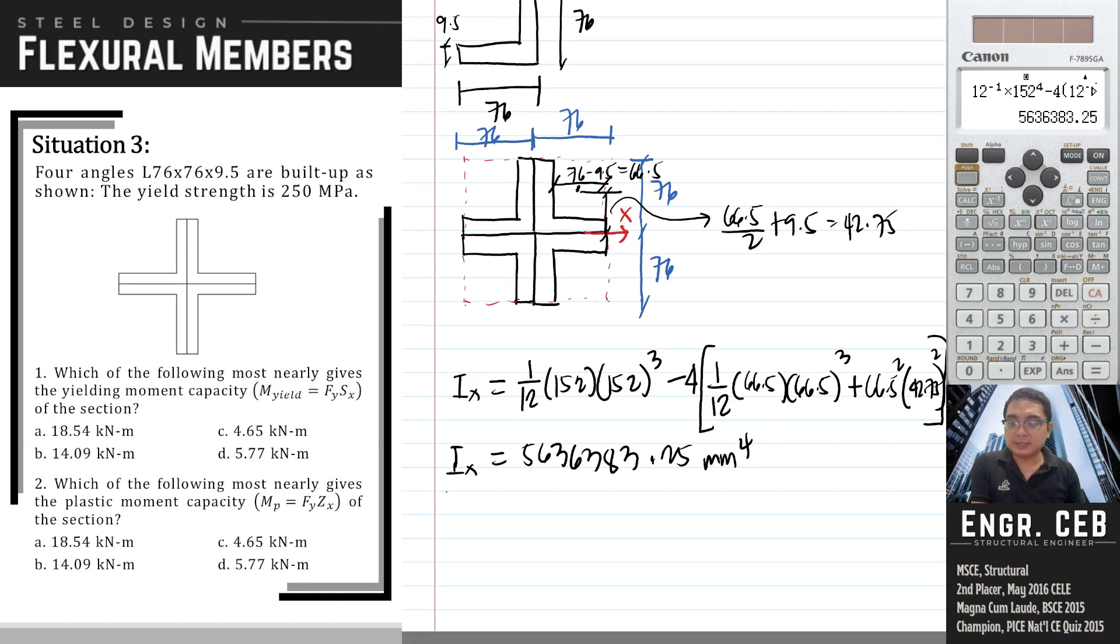To get the elastic section modulus, we will just divide this by the speed or the distance from the neutral axis to the farthest fiber. That distance is 76. So therefore we divide 5,636,383,0.25 by 76.